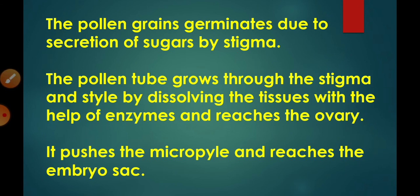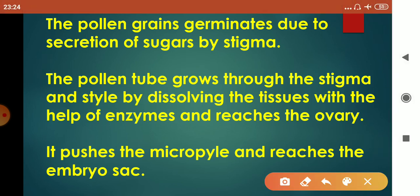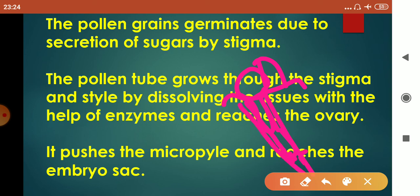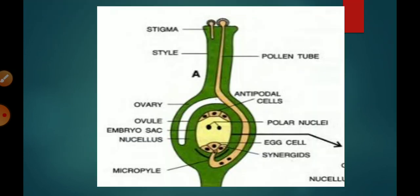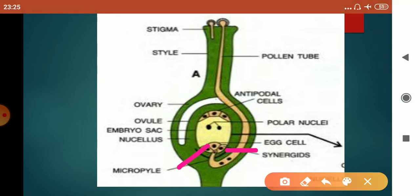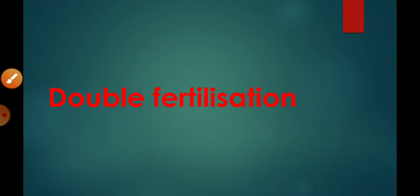How does the pollen grain germinate? The pollen grain germinates when it lands on the stigma of the same species. The stigma secretes sugar, the pollen grain gets nutrition from it, and then the pollen tube germinates. The pollen tube passes through the stigma and style — enzymes are released that dissolve the tissues in the way. The tube nucleus directs the pollen tube into the ovule. Then the pollen tube enters through the micropyle. The two male gametes are released inside the embryo sac.